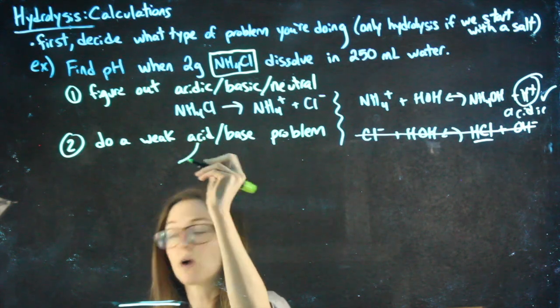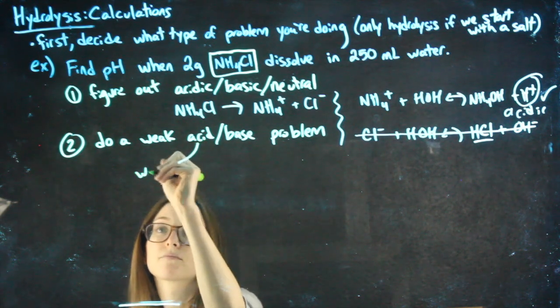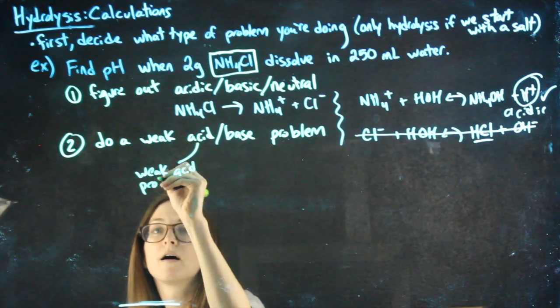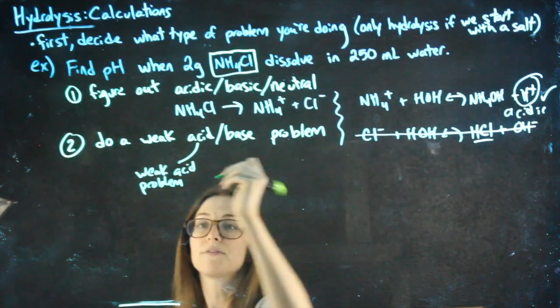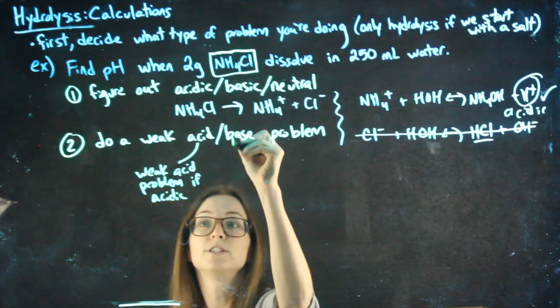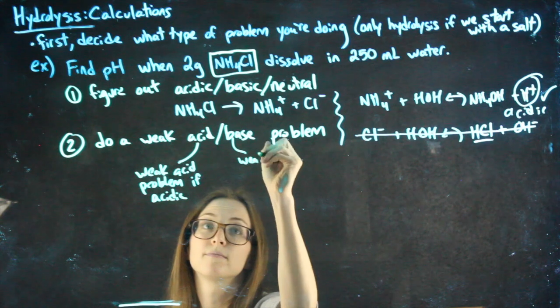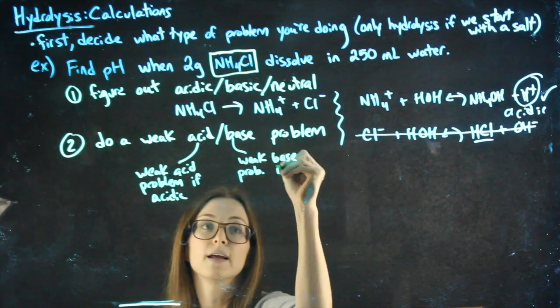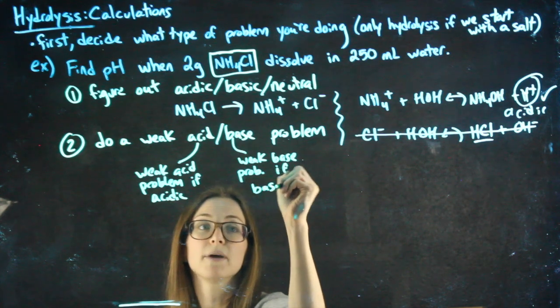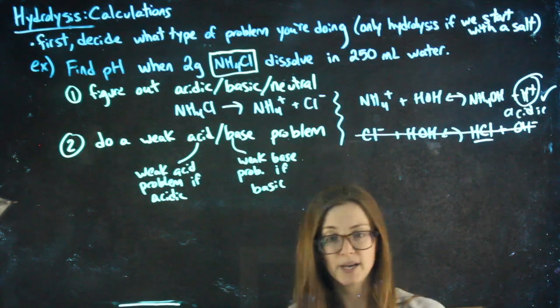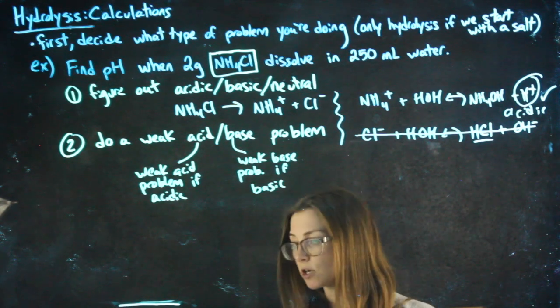You would do a weak acid problem if you figured out that it's acidic. You would do a weak base problem if you found out that it was basic. Again, it's probably not going to be neutral in one of these cases, because if it's neutral, we know the pH is 7, and there's not a problem to solve.